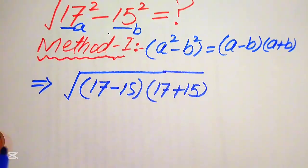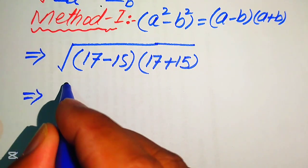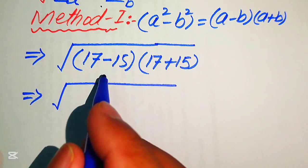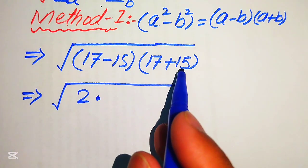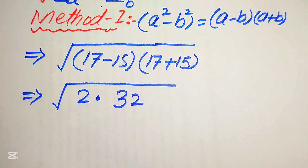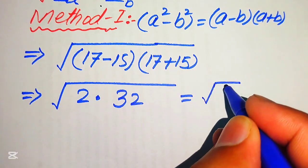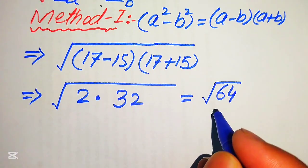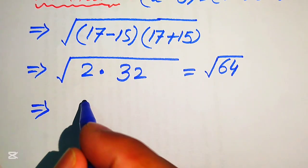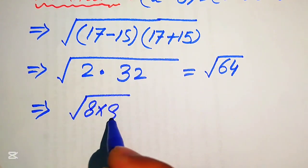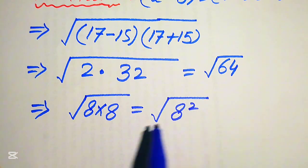Taking the whole square root, we add or subtract the like terms: 17 minus 15 equals 2, and it is multiplied by 17 plus 15 equals 32. In the next step we multiply 2 by 32, which equals 64. We then write 64 as 8 multiplied by 8, or in other words as 8 squared.